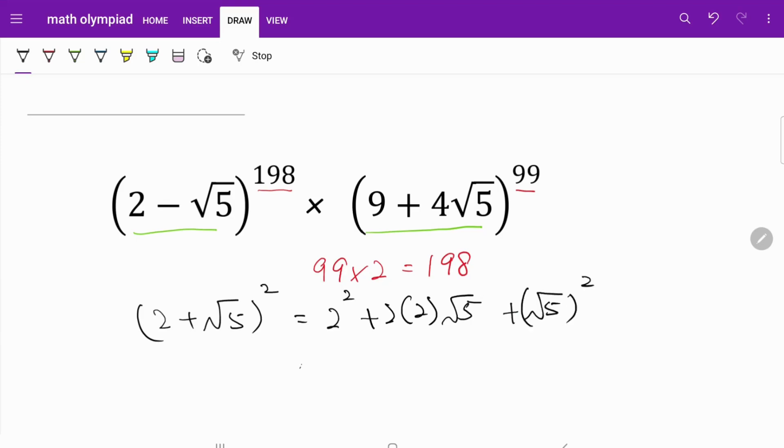If we do that, then that's equal to 4 plus 2 times 2 is 4. So 4 square root of 5 and the square root and the square will cancel each other. So we are left with plus 5. In other words, 2 plus square root of 5 bracket square is equal to 9 plus 4 square root of 5. And that's the relationship linking these two components.